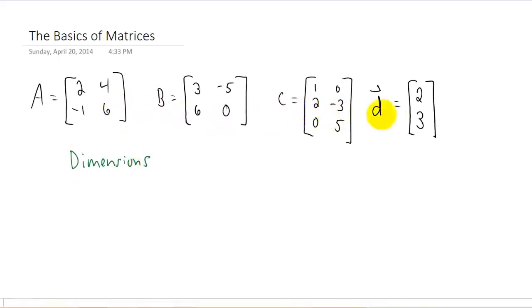Each one of these is considered to be a matrix, and every matrix has dimensions. This here is a 2 by 2 matrix, and this here is a 2 by 2 matrix as well. C is a 3 by 2 matrix, so now you'll realize that we write the number of rows as the first number and the number of columns as the second number.